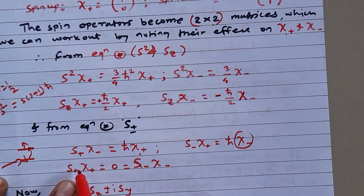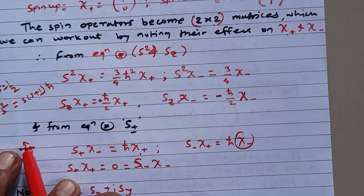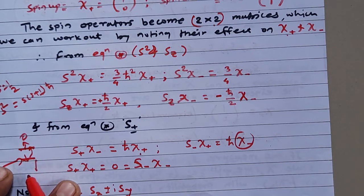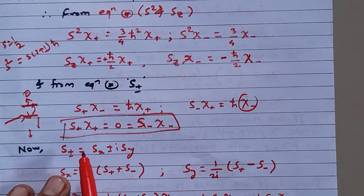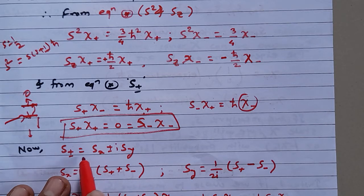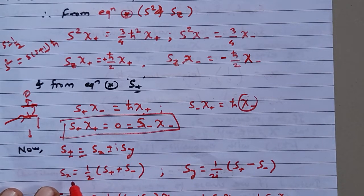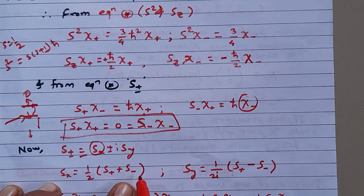If S+ operates on the spin-up state, there is no state above it, so the result is zero. Similarly, if S- operates on the spin-down state, there are no lower states, so that also gives zero — corresponding to the top and bottom rungs of the ladder. S+ and S- are defined as Sx ± iSy, so Sx = ½(S+ + S-) and Sy is obtained by subtracting them.